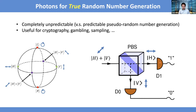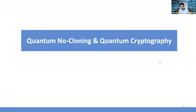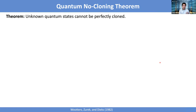Now getting into an application, quantum also has a very exotic property called the quantum no-cloning property. The statement of no-cloning is that an unknown quantum state cannot be perfectly cloned. Suppose I give you one copy of a quantum state without telling you what the state is — there is no way that you can make a perfect copy of the same state. If you know what the state is, sure, you can make multiple copies. But if you don't know, there is no way to make a perfect copy.